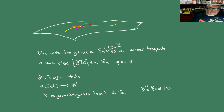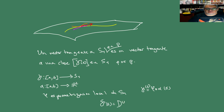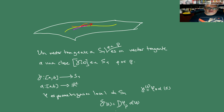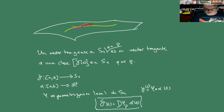Una curva gamma que va de un intervalo a la superficie la podemos ver como una alfa que va a R², seguida de una parametrización. Si φ es una parametrización local de S₁, escribimos gamma como alfa seguida de φ. Entonces el vector tangente a gamma es, por la regla de la cadena: γ'(s) = dφ(P) · α'(s). Aquí α'(s) vive en el plano y dφ(P) es una transformación lineal del plano al espacio. Esto es lo que queremos decir con un vector tangente a una superficie, y a partir de aquí retomamos esta discusión en la siguiente sesión.